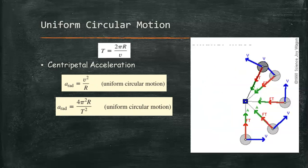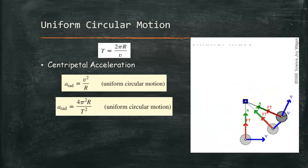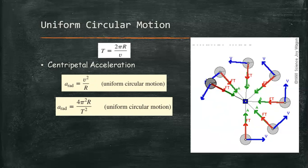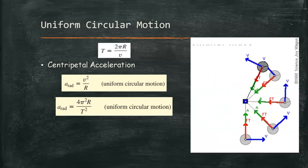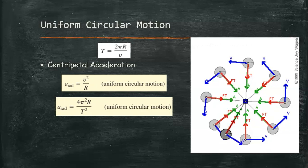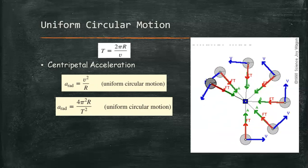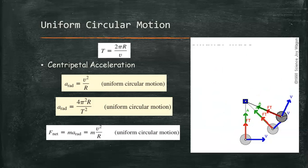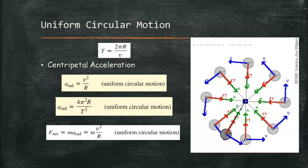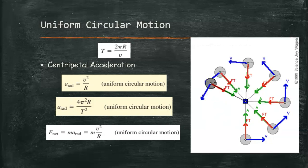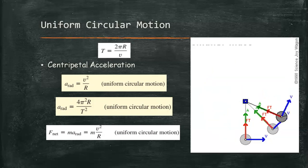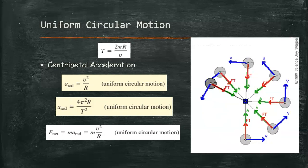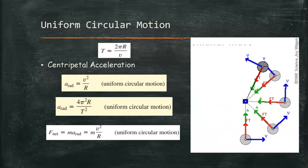Uniform circular motion, like all other motion of a particle, is governed by Newton's second law of motion, which states that force is equal to mass times acceleration. Therefore, the centripetal force in uniform circular motion is equal to the mass times the centripetal acceleration, which gives us mass times v² over radius.